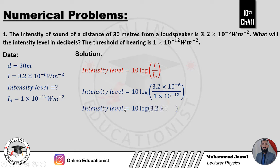Intensity level equal to 10 log. Divide karenge: 1 divided by 3.2 se 3.2 hi rahega. Minus 12 upar jayega to plus 12 ho jayega. Minus 6 plus 12 — 10 power 6 ho jayega. Ab darmiyaan mein multiply ka sign hai, to log dono ke saath separate likhenge to plus ka sign aayega: log 3.2 plus log 10 power 6.